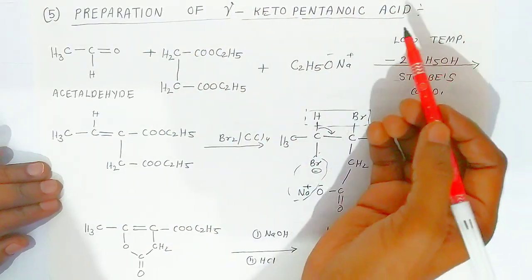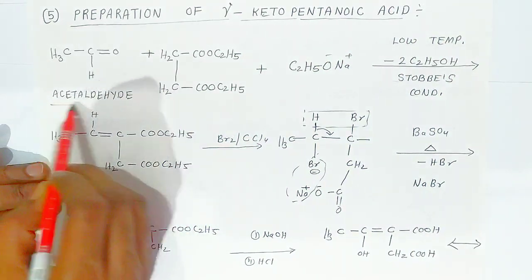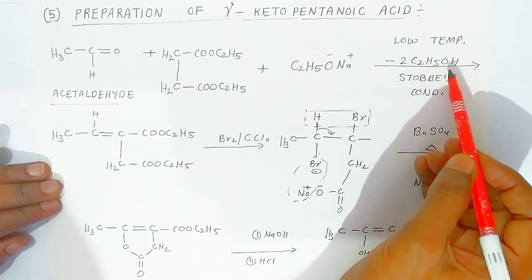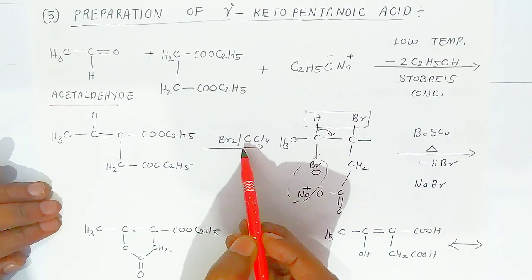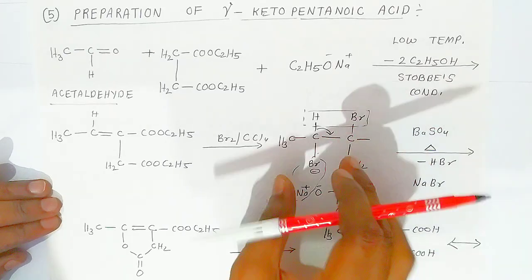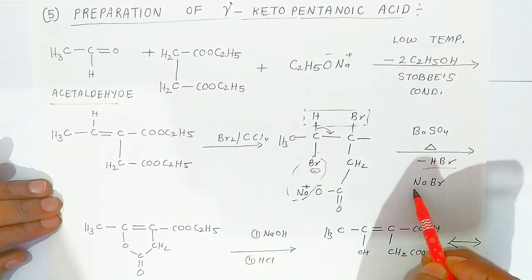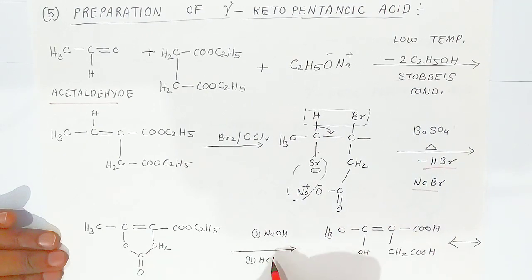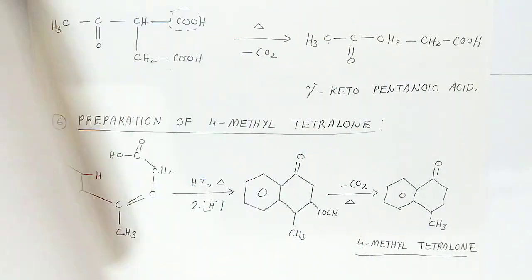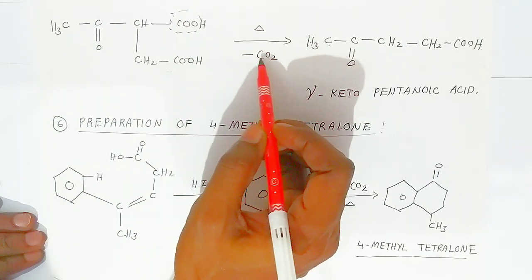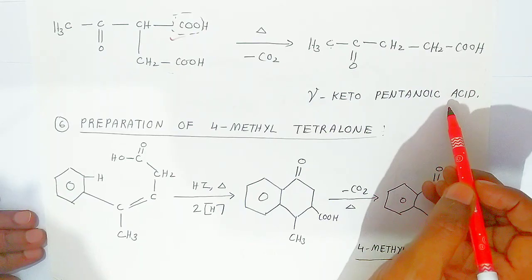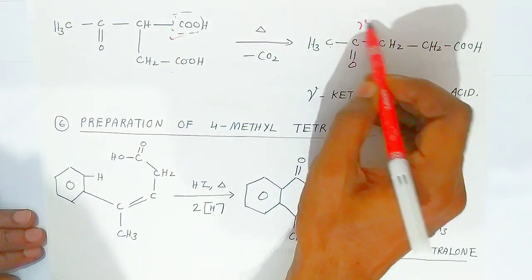The fifth application is preparation of gamma-keto pentanoic acid. Acetaldehyde and diethyl succinate react in presence of sodium ethoxide at low temperature, with elimination of ethanol. The product is then brominated in presence of carbon tetrachloride. In presence of BM sulfate, there is elimination of HBr and NaBr. Upon hydrolysis, resonance occurs, and heating eliminates carbon dioxide to give gamma-keto pentanoic acid, where a keto group is present at the gamma position.